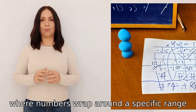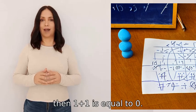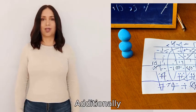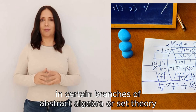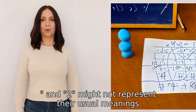For example, in modular arithmetic, where numbers wrap around a specific range, if the range is two, then one plus one equals zero. Additionally, in certain branches of abstract algebra or set theory, the symbols one, plus, and two might not represent their usual meanings.